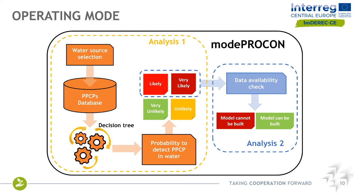In case the PPCP is likely or very likely to be detected in drinking water systems, it is recommended to perform the data availability check and eventually to develop a model in order to predict at which concentration and when a possible PPCP could enter the drinking water system. The data availability check will guide the stakeholder towards the solution of the problem and to the decision of whether or not the model can be built. In case the model cannot be built, ModProcon will try to provide suggestions to the stakeholder in order to overcome this issue.